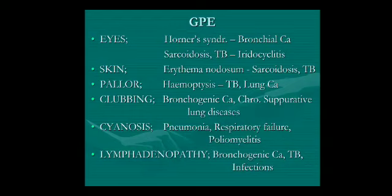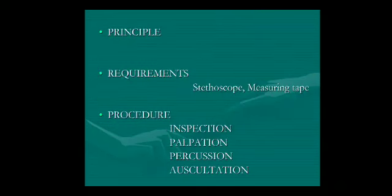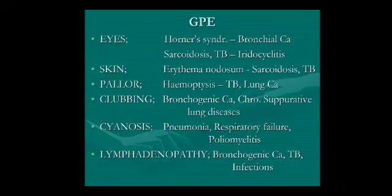The systemic examination of the respiratory system is carried out in four steps: inspection, palpation, percussion, and auscultation. Inspection means visually observing; palpation involves touching the areas; percussion follows; and auscultation uses the stethoscope to listen to all the areas. The examination should be done in this order. The major equipment required is only a stethoscope and a measuring tape.